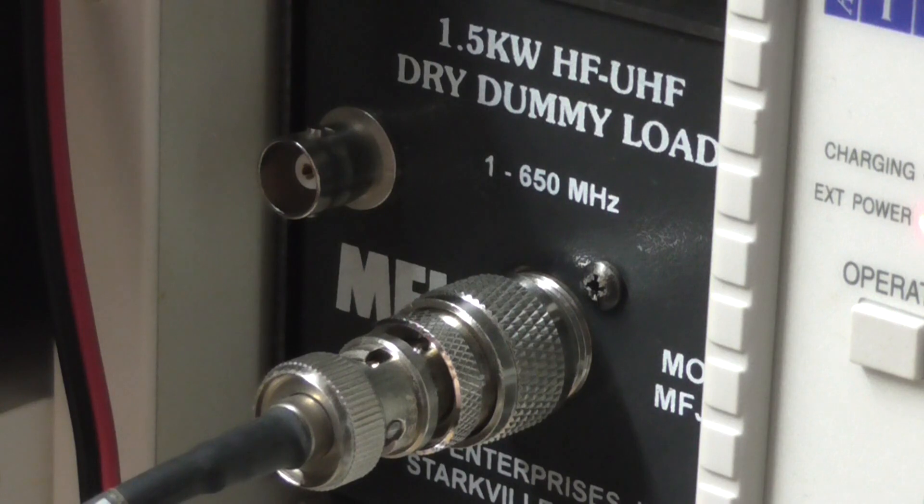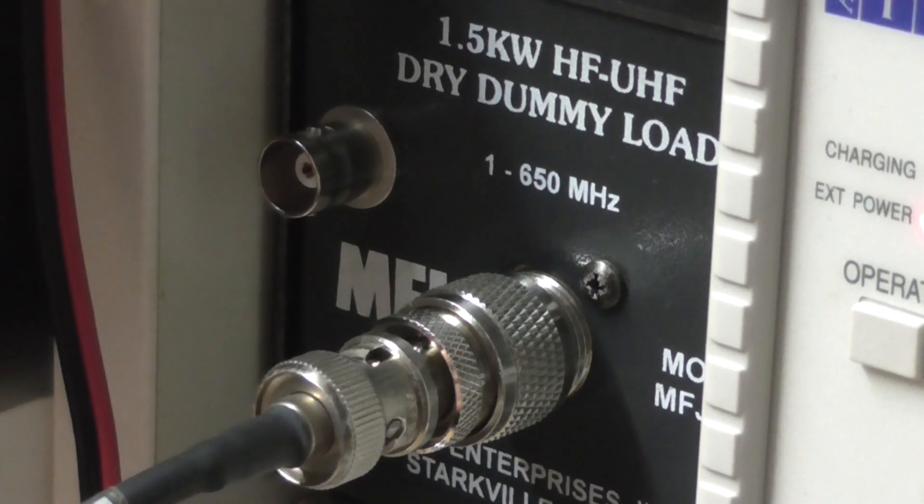Hello, this is the MFJ264 dummy load and it's rated from 1 MHz up to 650 MHz. Today we're going to look with another tool which we'll just scroll down to.